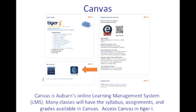Canvas is the way that Auburn students manage their classes. Many teachers will post assignments and grades via Canvas, so it's important to check it often. You can access Canvas from the Tiger Eye tab of AU Access or in the Students tab of the Auburn website.